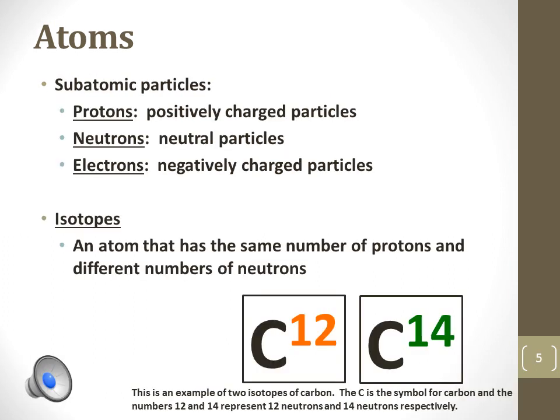Subatomic particles that make up atoms can be described by not only their position, but also their mass, size, and charge. Protons are positively charged, and electrons are the opposite of protons and negatively charged. Neutrons are said to be neutral because they have no charge.